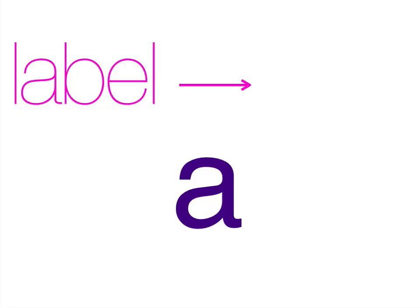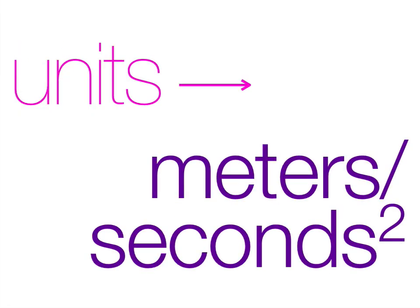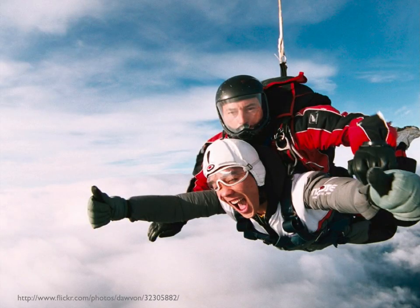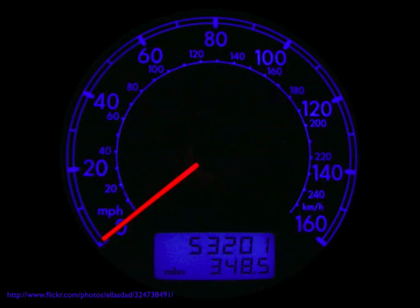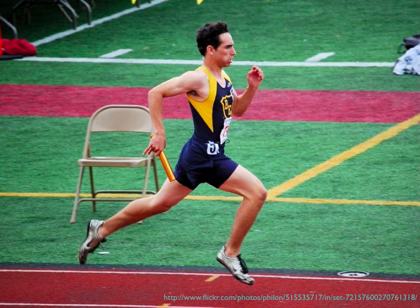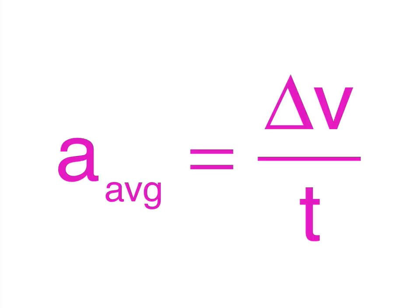This brings us to our final topic: acceleration. Acceleration in a physics equation is labeled A and has units meters per second squared. All acceleration is is the change in velocity per time. It's speeding up and it's slowing down — it's a Ferrari selling point, 0 to 60 in 3.3 seconds. Acceleration is speeding up and slowing down. In physics problems, it's really useful to talk about average acceleration. Average acceleration equals the change in velocity divided by time. This equation also needs to be committed to memory.